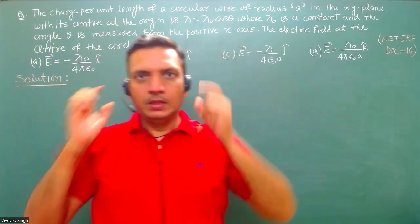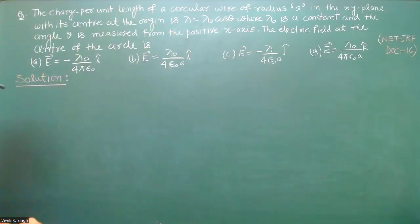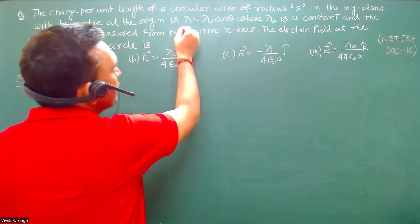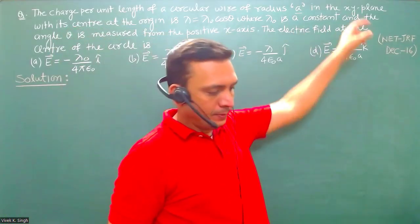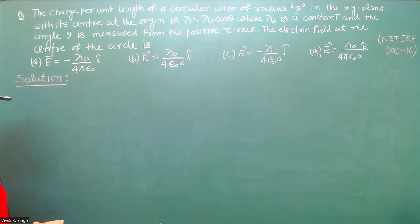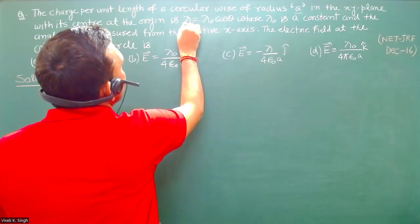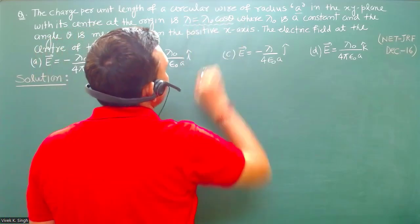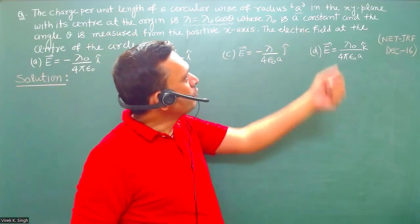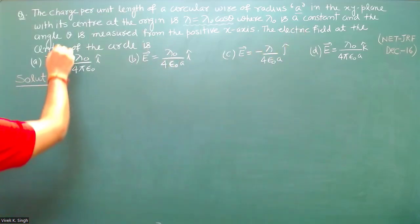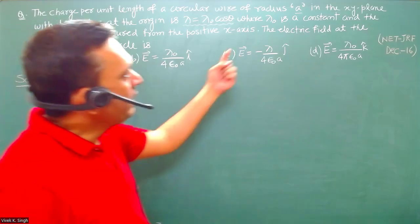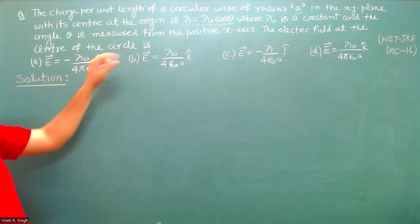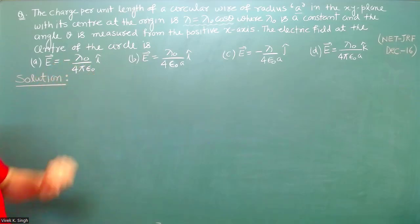Hello everyone. Now we will see this question. It is given that the charge per unit length of a circular wire of radius A in the xy plane with center at the origin is given as lambda = lambda naught cos theta, where lambda naught is some constant and the angle theta is measured from the positive x-axis. We have to find the electric field at the center of the circle. Four options are given.